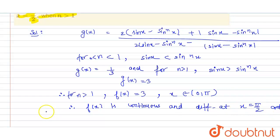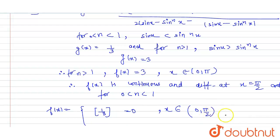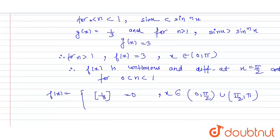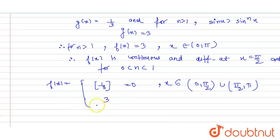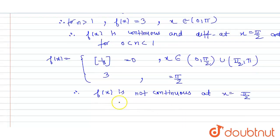For n lying between 0 and 1, f(x) = [1/3] = 0 when x belongs to [0, π/2) ∪ (π/2, π], and f(x) = [3] = 3 when x = π/2. Therefore f(x) is not continuous at x = π/2, because the value jumps to 3 at that point.